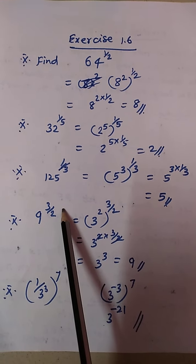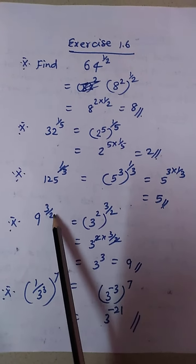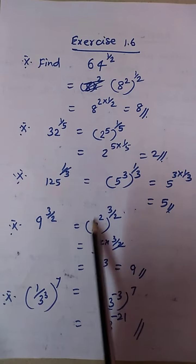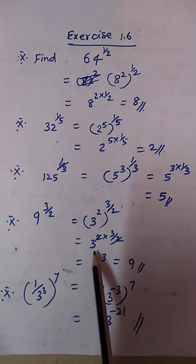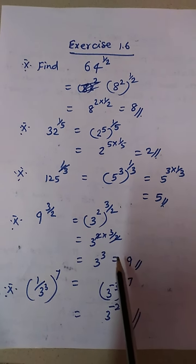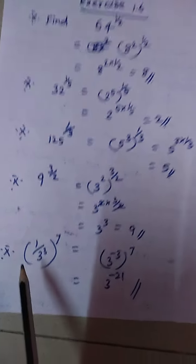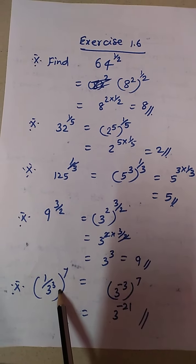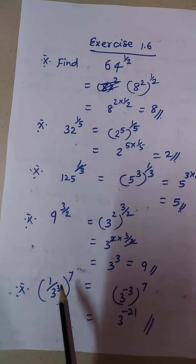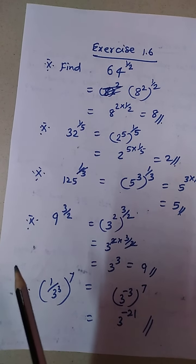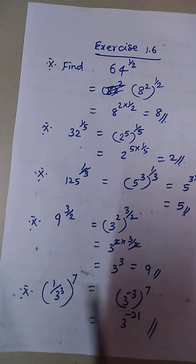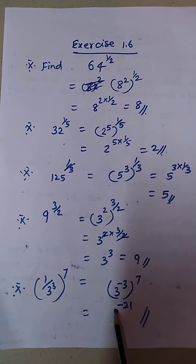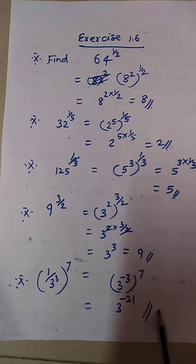For 9^(3/2): the denominator is 2, so 9 must be written as something to the power 2. Since 9 = 3², we get (3²)^(3/2) = 3^(2 × 3/2) = 3³ = 27. For (1/3³)^7: 1 by 3³ is written as 3 to the power minus 3. So (3^(-3))^7 = 3^(-3 × 7) = 3^(-21) is the answer.